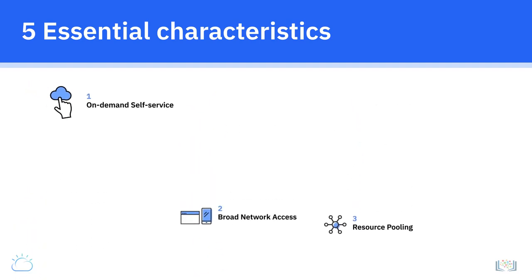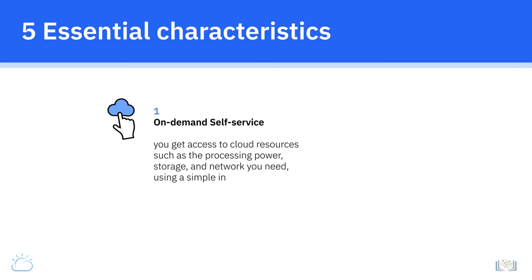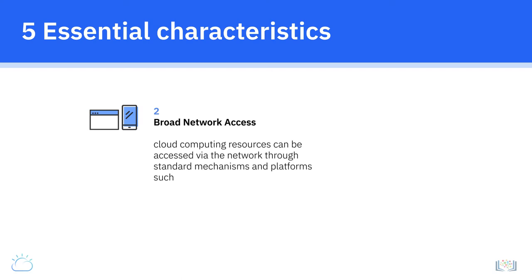On-demand self-service, the first characteristic, means that you get access to cloud resources such as processing power, storage, and network using a simple interface without requiring human interaction with each service provider. The second characteristic, broad network access, means that cloud computing resources can be accessed via the network through standard mechanisms and platforms such as mobile phones, tablets, laptops, and workstations.